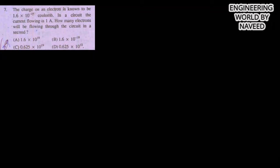Next MCQ: the mass of a proton is roughly how many times the mass of an electron? The answer is option C, 1840 times. So option C is the correct answer.